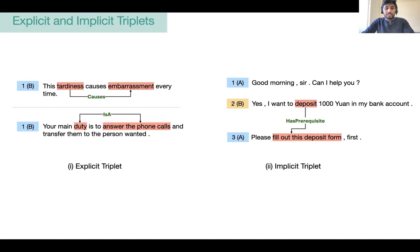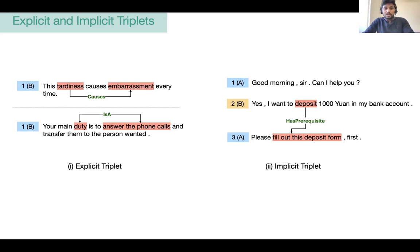Number two is implicit, shown here on the right, where the explanation is entirely contextual. This makes it more difficult for machines to infer, as it requires a more complex form of reasoning and understanding of the dialogue. Among these two types, the implicit triplets are much more interesting as they involve non-trivial inference, which becomes even more challenging on dialogues due to the latent background knowledge shared between the speakers.